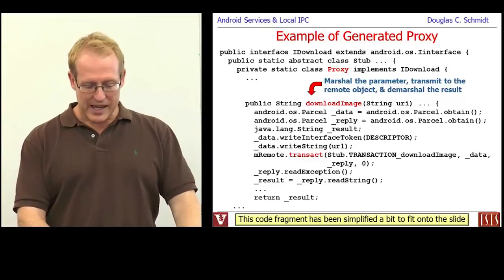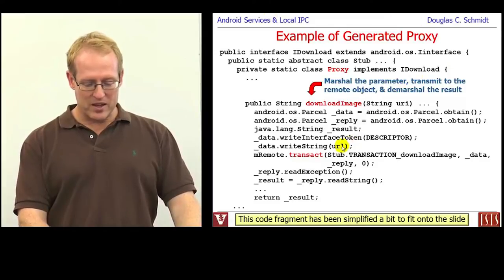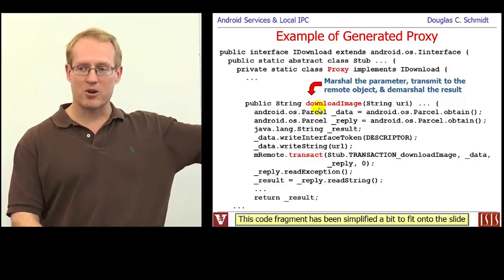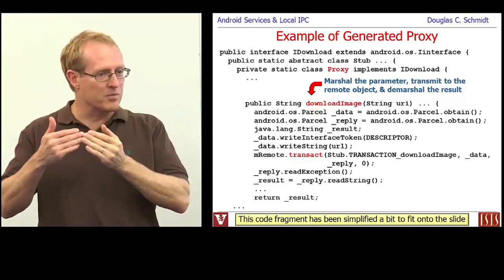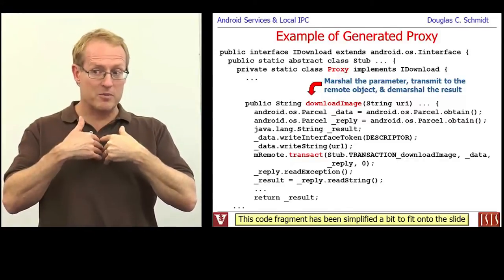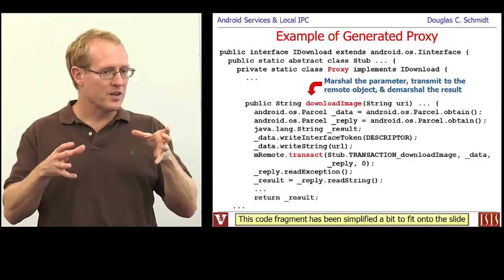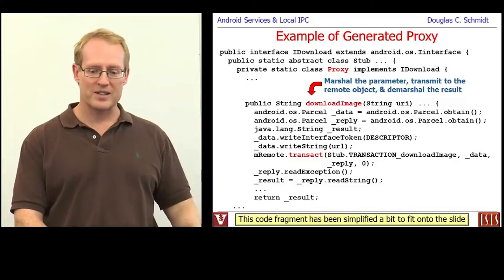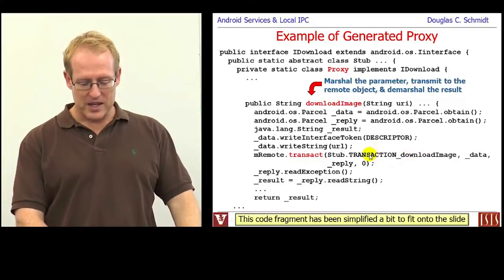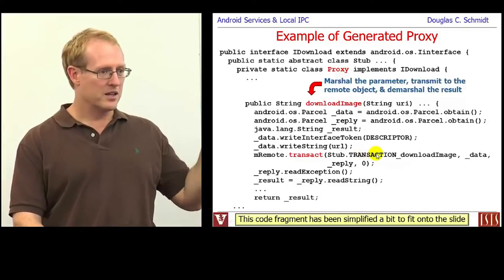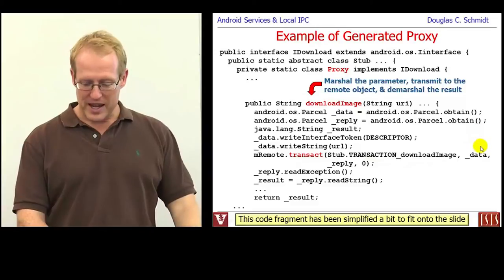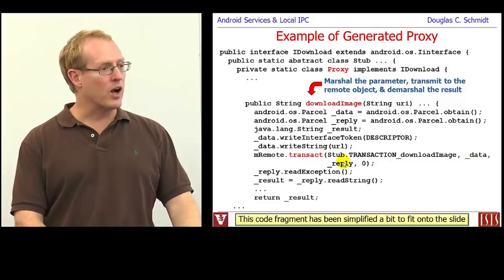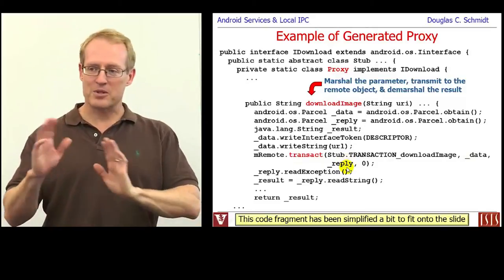The proxy takes the URI that we pass in and writes it as a string into the _data parcel, essentially copying the bytes of our URI from the client side into the parcel, which keeps track of its type and other metadata. Then it calls a method called transact, saying: here's the operation I want performed — the TRANSACTION_downloadImage operation — here's the data to work on, which is the string containing the URI, and here's where I want you to put the reply. When it's done, we take the reply and copy its result as a string into _result, which is returned as the return value.